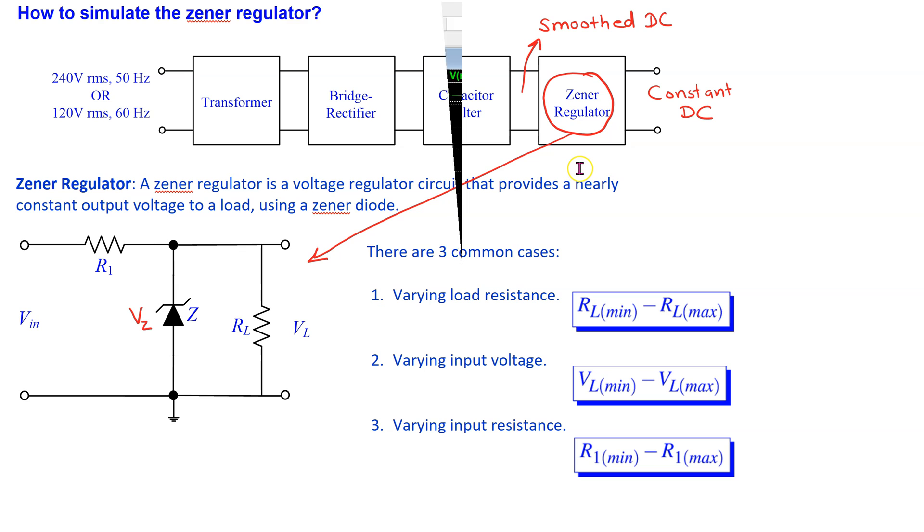The Zener regulator converts smooth DC to constant DC. The theory and explanation of a basic Zener regulator circuit is discussed in a different video in this playlist. The link is included at the end of this video.